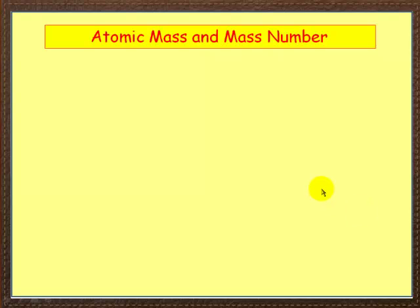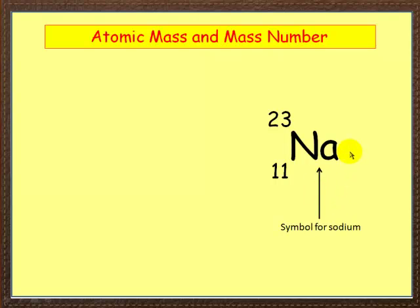Let's look first of all at atomic mass and mass number. Now every element — all 110 or however many there are — have got two numbers attached to them. This is the symbol for sodium. It's a bit odd; you might have thought it would be SO or something, but no — the symbol for sodium is Na. There are always two numbers attached: 23 here and 11 here.